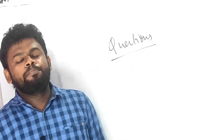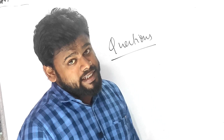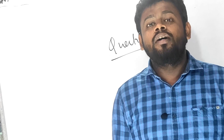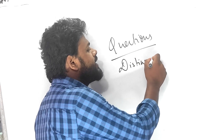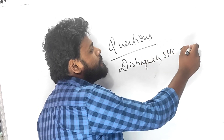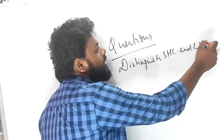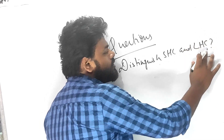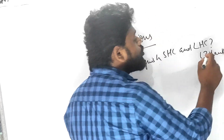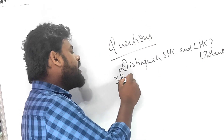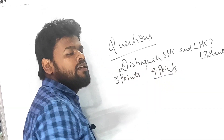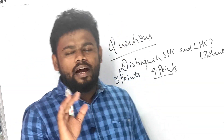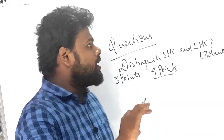To score very good marks, writing style is really important. For example, if a distinguish question comes — say, distinguish between specific heat capacity and latent heat capacity — and it carries two marks, you have to give three points. For three marks, you have to give four points. If you have time, you can give five points. Leave a space and remember: after completing an answer, draw a line.